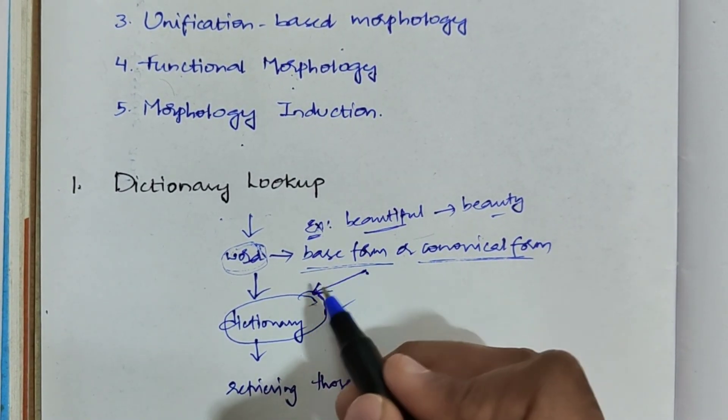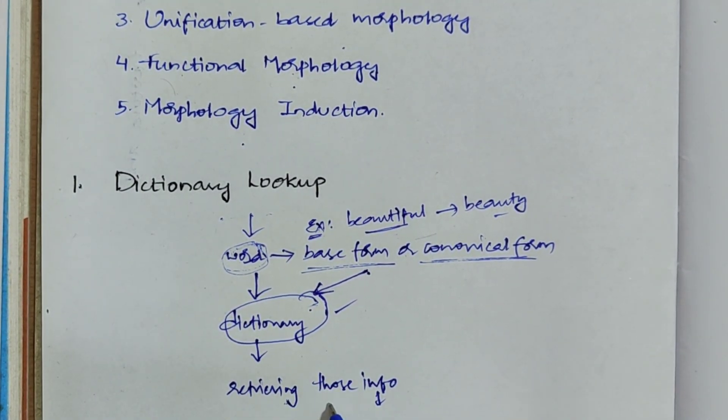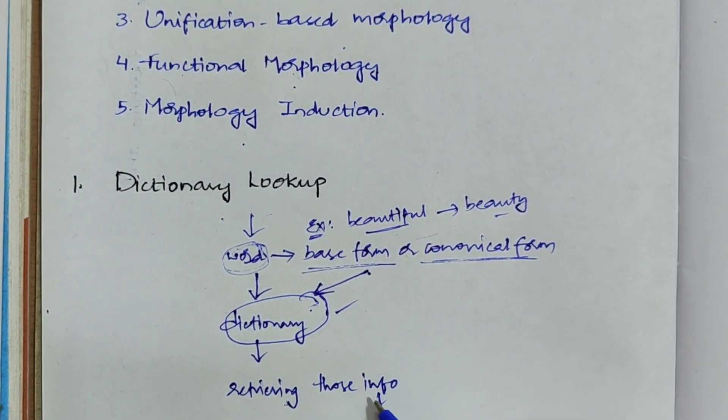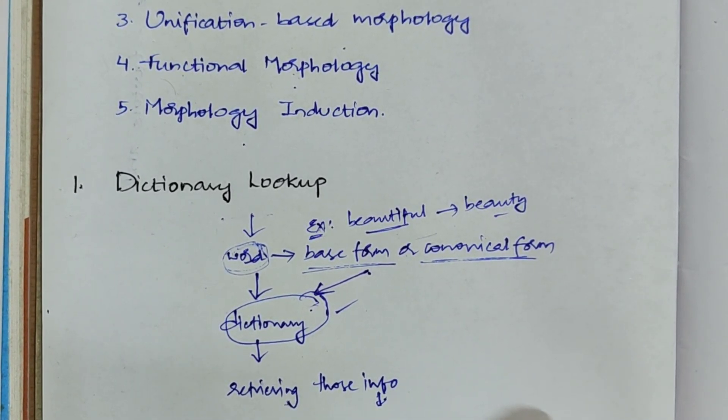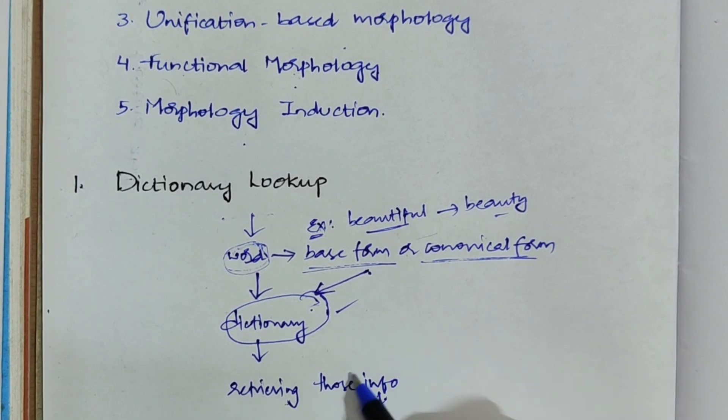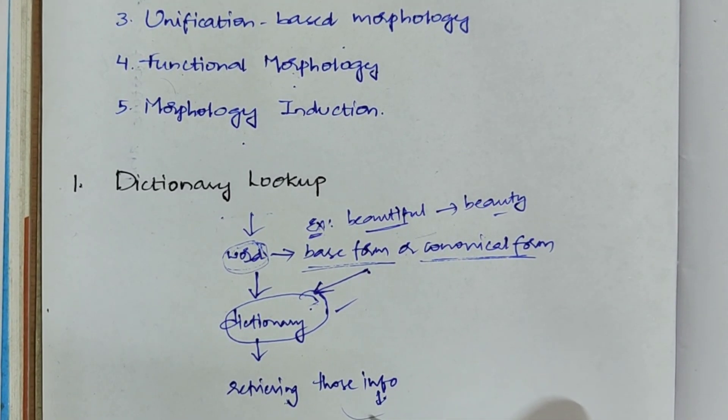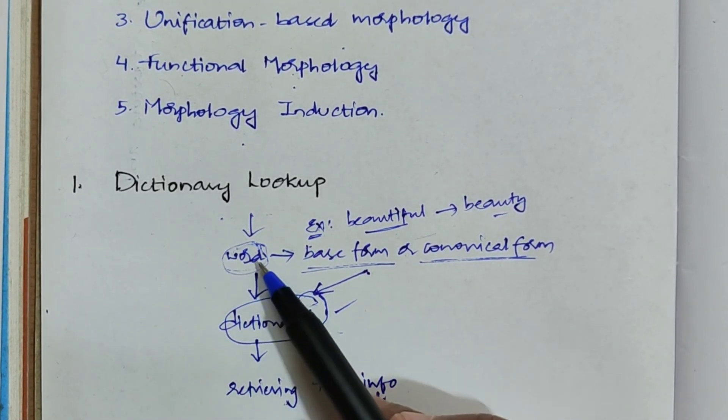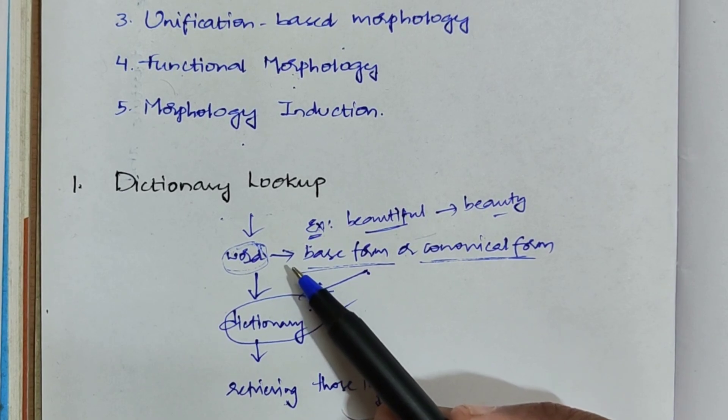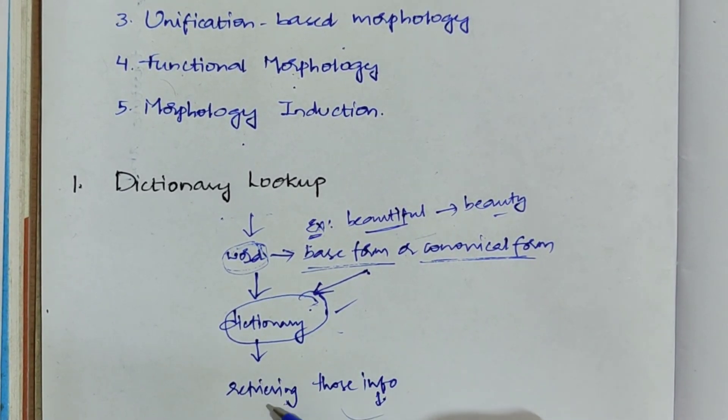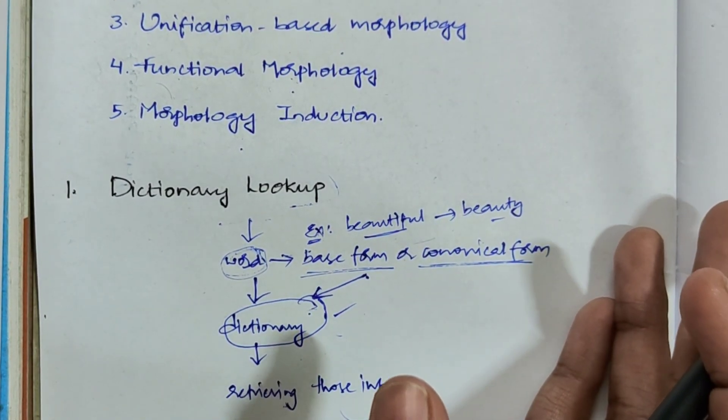If you find that word in the dictionary, then you will be retrieving the information about that particular word. What information you will retrieve is either parts of speech, the meaning of the word, or the structure of the word. There might be chances that you may not find any matches regarding that word, or there might be chances that you will be finding many matches to that single word. At that time, what this dictionary lookup will do is it will combine with other models in order to analyze that particular word.